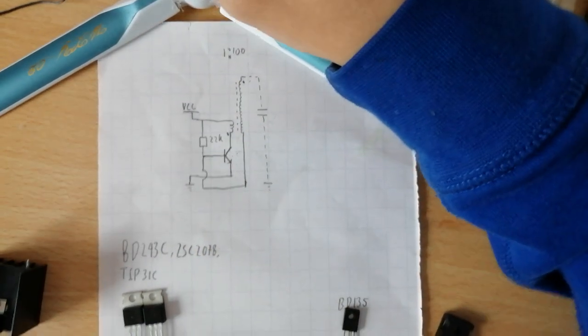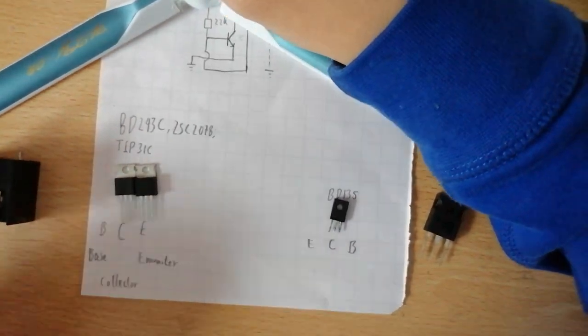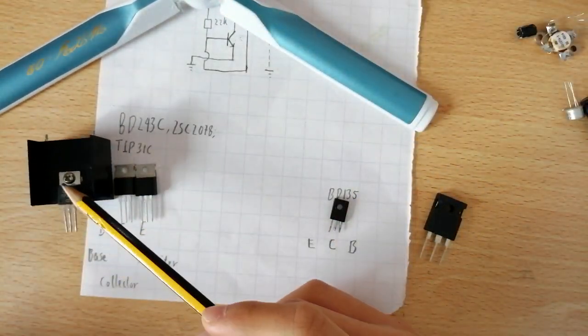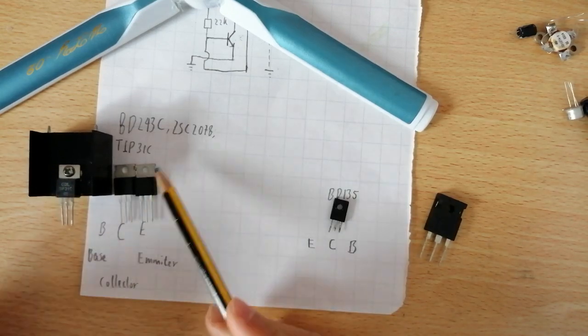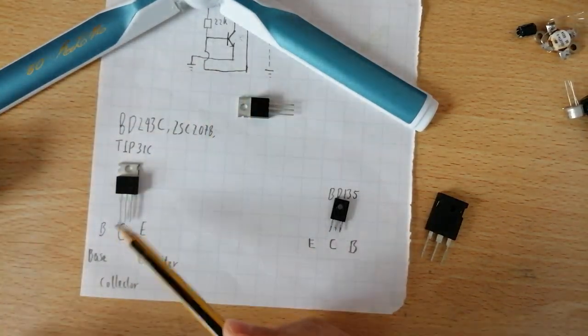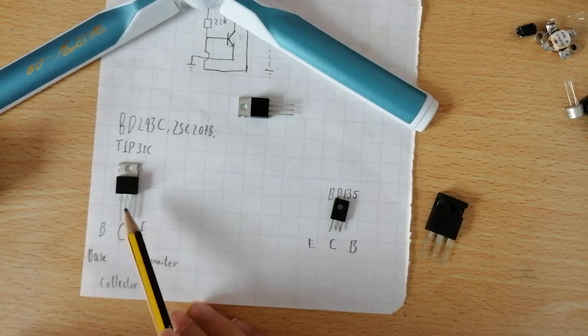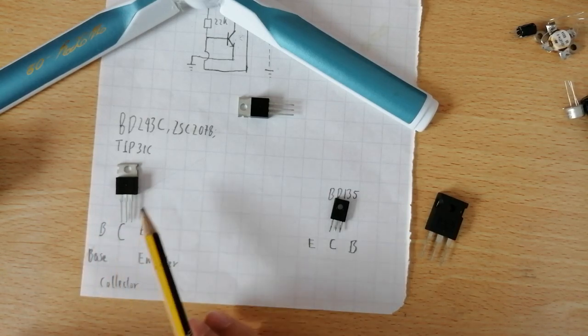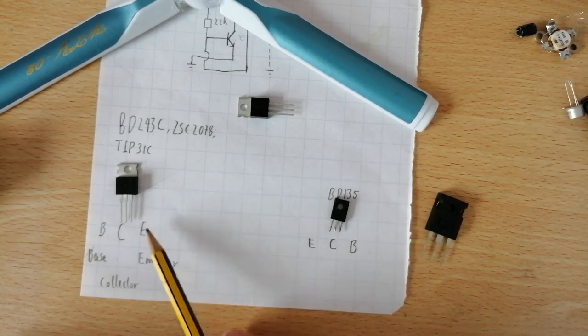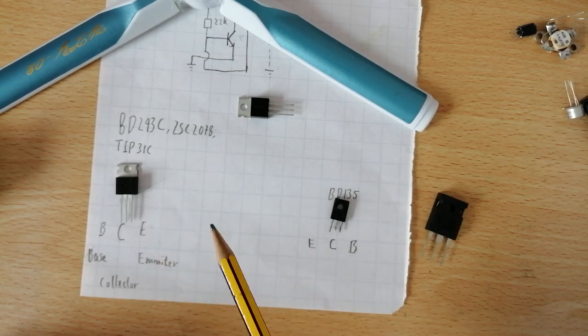And now, back to the pin connections. For those three, they have to share the same pin connections. First pin of the transistor is base. In the middle, the center pin is collector. On the far right side will be emitter pin, which is very important.